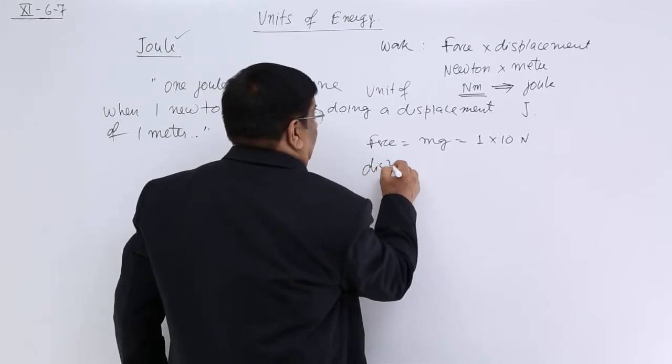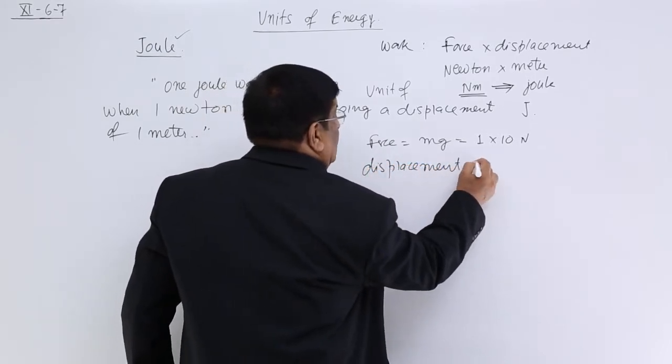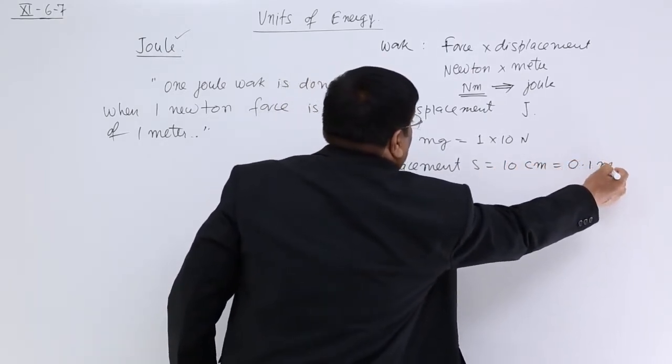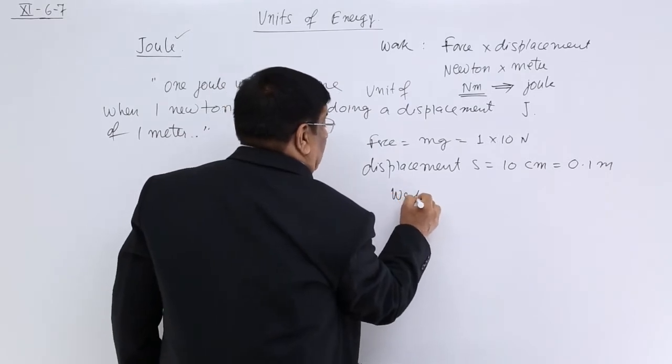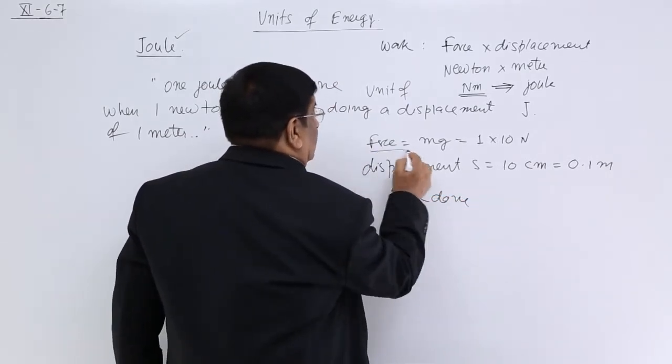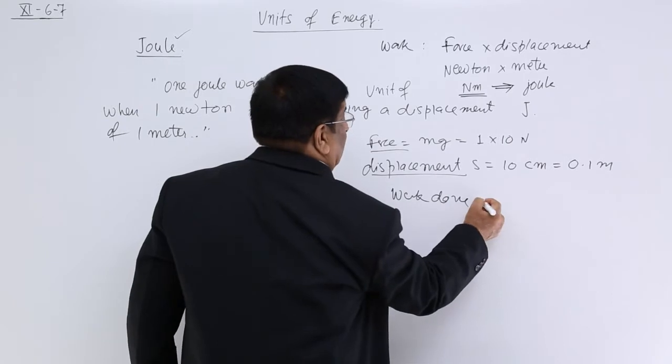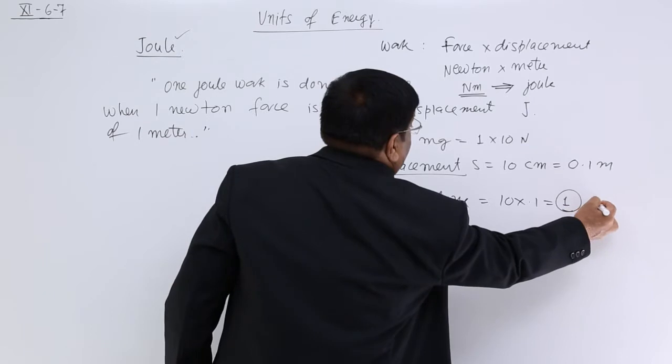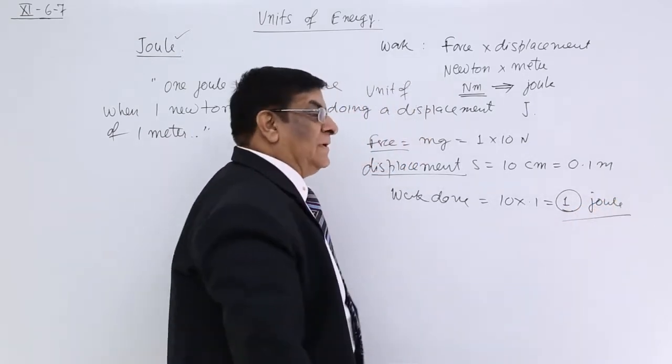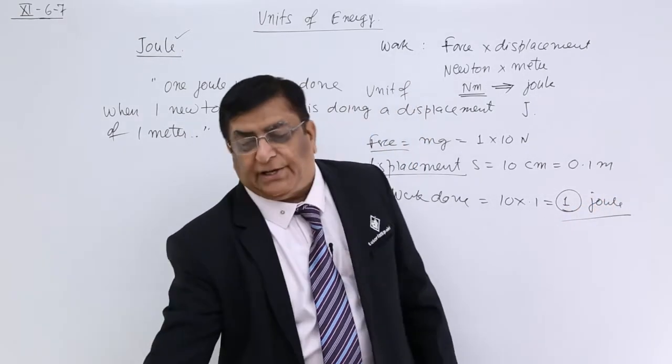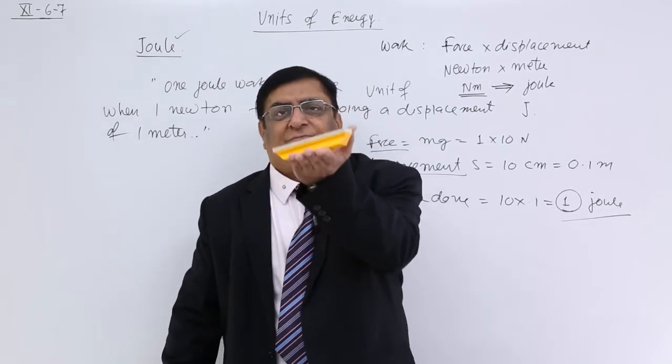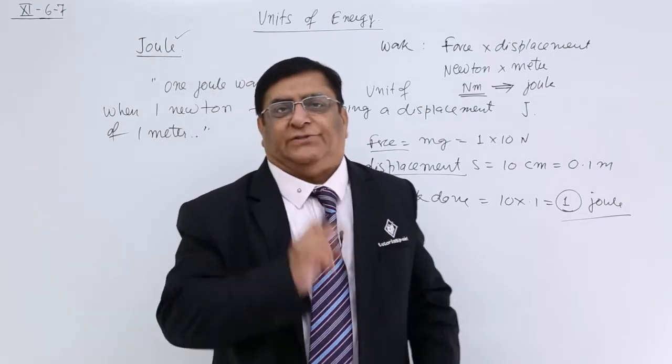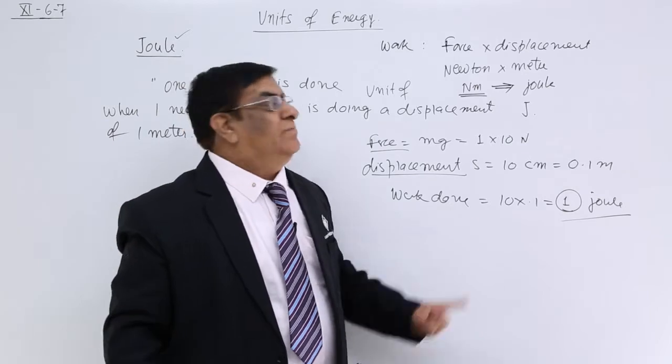That is displacement. 10 centimeter, 0.1 meter. And the work done, that is force multiplied by displacement. So this is 10 into 0.1 is equal to 1. This is 1 Joule. How much is 1 Joule? Take 1 kg in your hand, raise it by 10 centimeter. The work you have done is 1 Joule. This is an idea what 1 Joule means.